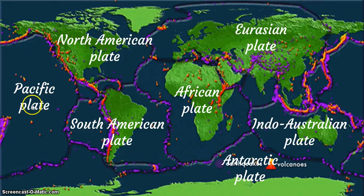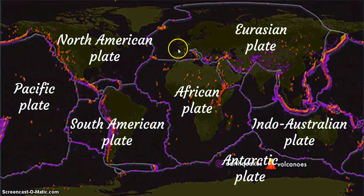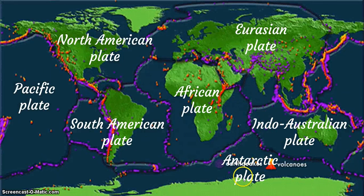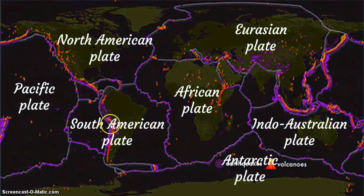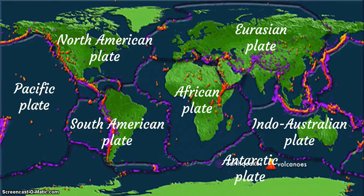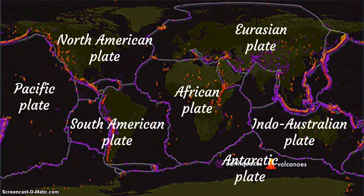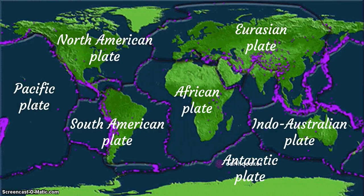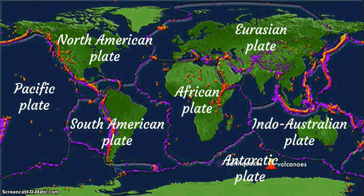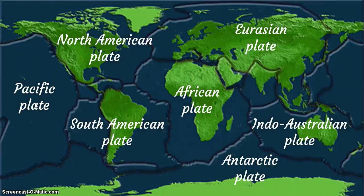There are seven major tectonic plates. Let's go over them quickly: the Eurasian plates, Indo-Australian plates, the Antarctic plates, the African plates, the North American plates, the South American plates, and the Pacific plates. Remember, the tectonic plates are also called the lithospheric plates. There are minor tectonic plates, but we just need to know the major ones at this level of our study.